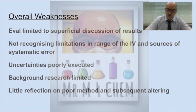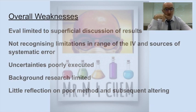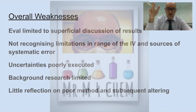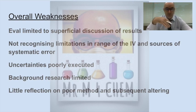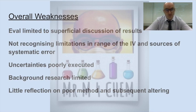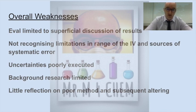Other weaknesses were little reflection on poor method and subsequent altering. A wonderful thing for any student to do in an IA is to say: I explored my research question. I did a range of five independent variables at 10, 20, 30, 40, 50 degrees C, and it just didn't work. Put that down — say it didn't work, I tried it, then I reflected and I changed my temperatures to, say, 60, 70, 80, 90, 100, or minus 20, minus 10. The biggest range was found in zero to 10, so I did five, six, seven, eight, nine, ten. This reflection and reaction phase seems to be omitted from many IAs, which would immediately bump those IAs up into the next bands on personal engagement, exploration, and potentially even on analysis.